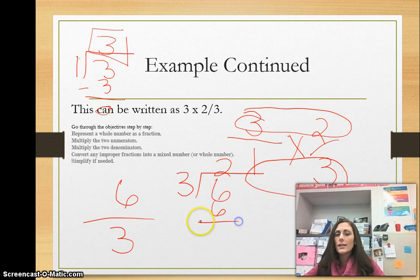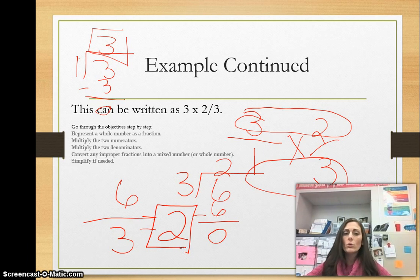Two times three is six. So there is no remainder. So that means six-thirds is two. And that is our final answer. So two wholes is our answer.